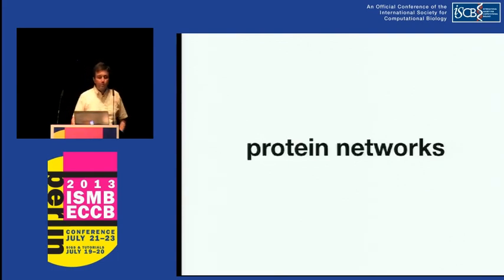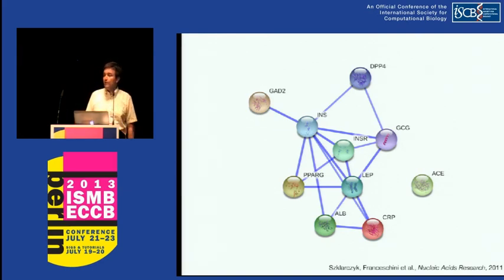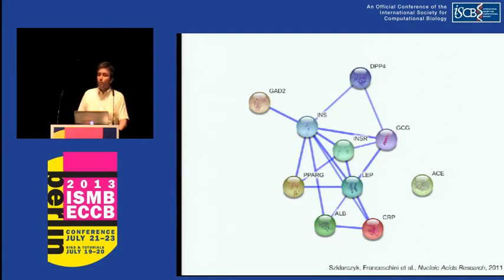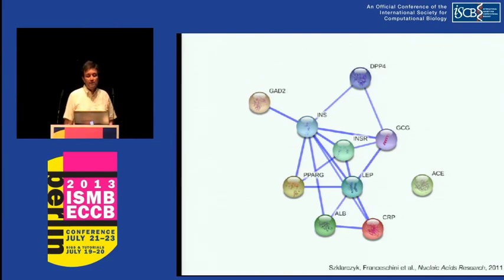Starting off with protein networks — I'm one of the developers of the STRING database. Many people in this room are familiar with the database and have tried using it to query with one protein to get associated proteins, to predict protein function, or putting in a large number of proteins coming out of a microarray or proteomic study, to try to see how it's structured into functional modules, protein complexes and so on. But where do these underlying protein interactions in the STRING database actually come from?